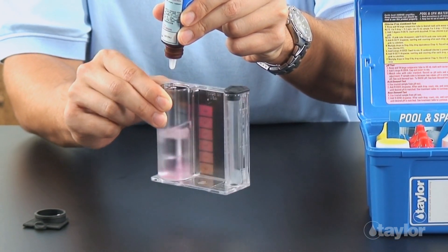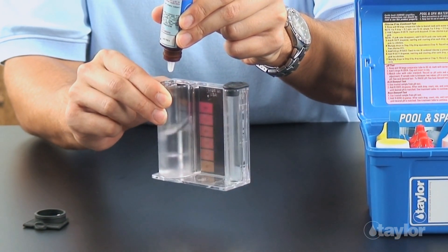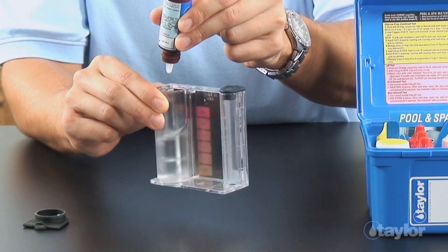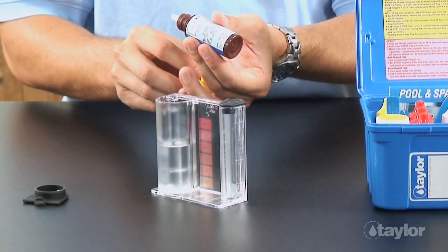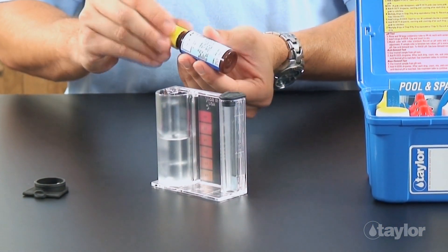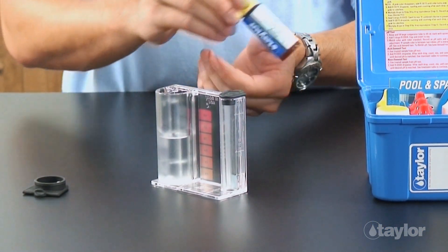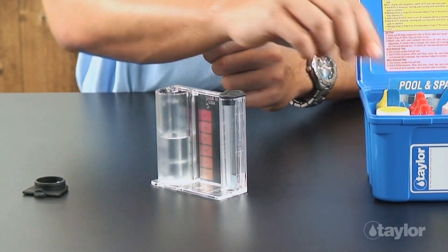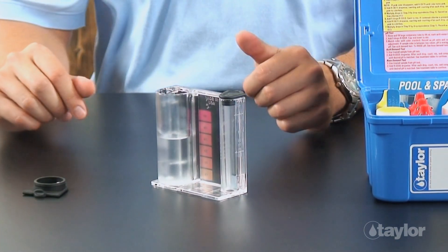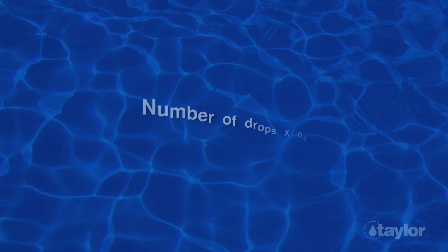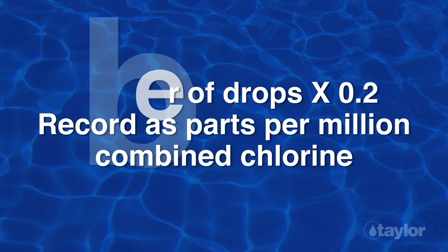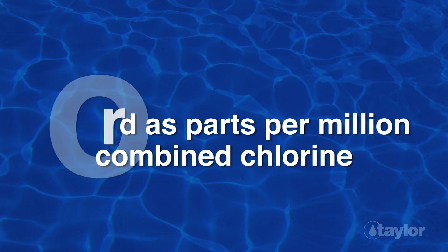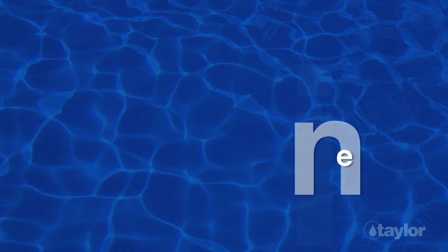Add one more drop of titrant after the endpoint to be certain the color change is permanent. If the color remains unchanged, do not count this drop. Multiply the drops expended in the previous step by 0.2 and record as parts per million combined chlorine.